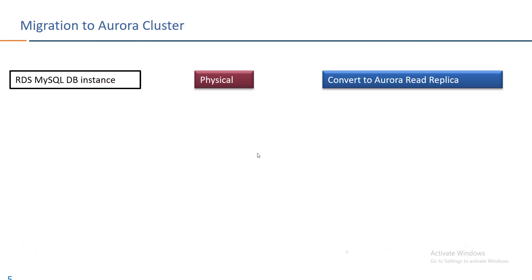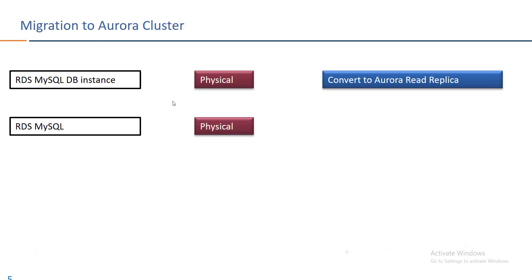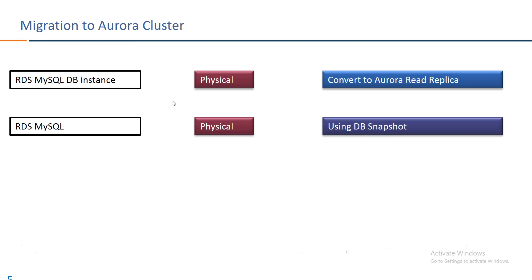You can create a read replica of the Aurora cluster and then tell your application to point to the new read cluster, then convert the read cluster into standalone. In the second option, from an RDS MySQL instance you can do a physical migration using a DB snapshot — create a snapshot and then convert it into an Aurora cluster using that DB snapshot.